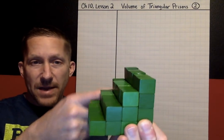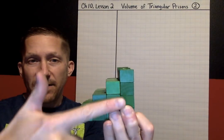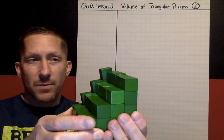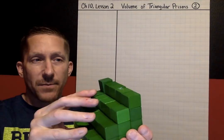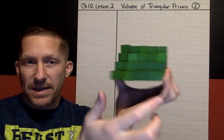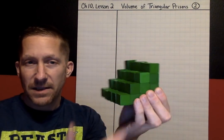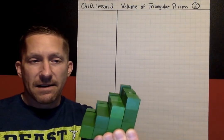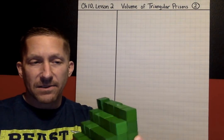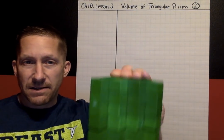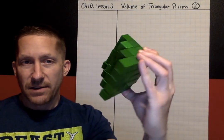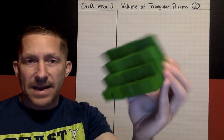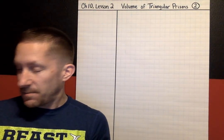This base here is identical to this base. If I flip it around, this base is the same as this — they're parallel and identical. Here is a triangular prism. So we are going to learn today how to find the area of one of these triangular prisms.